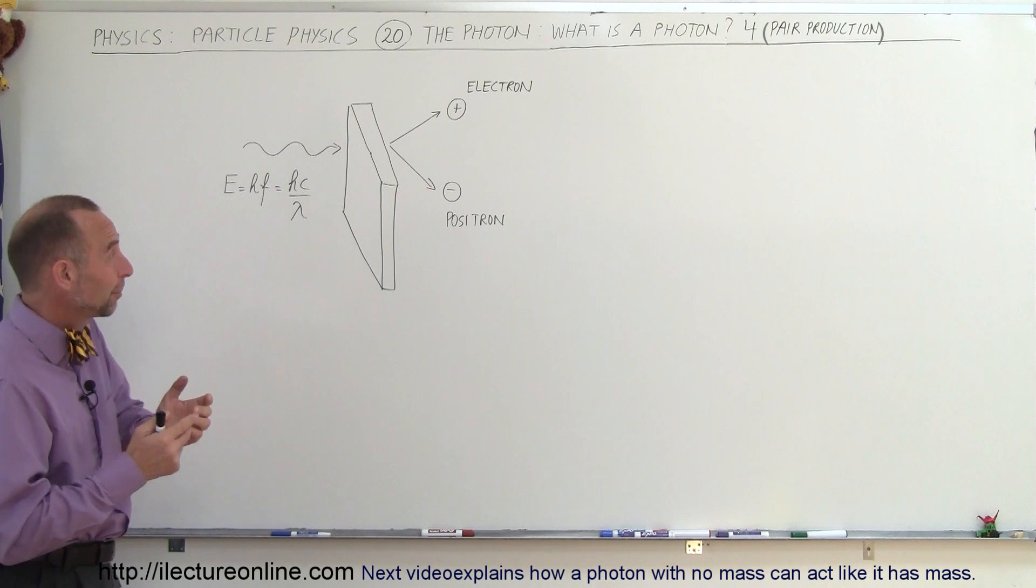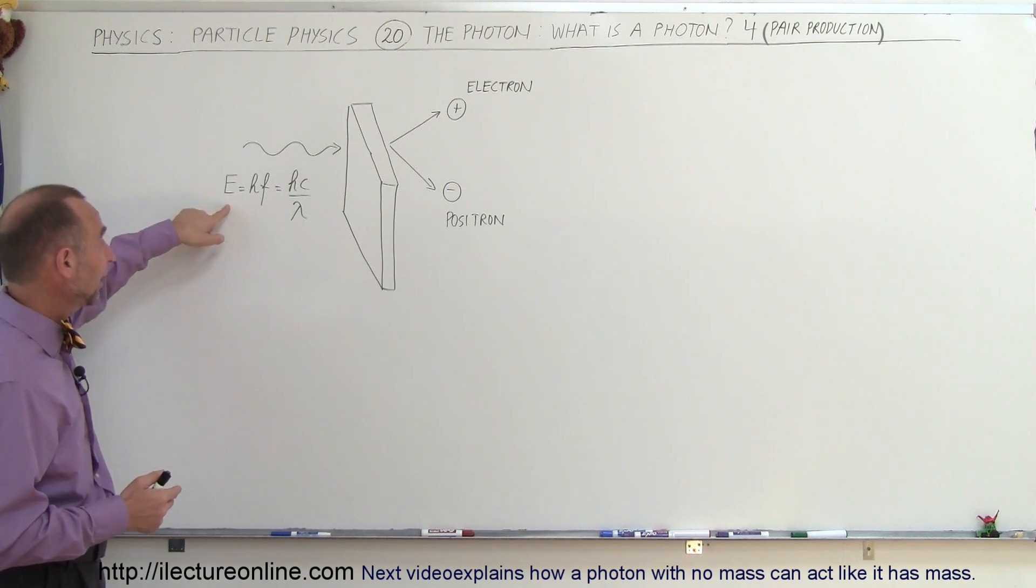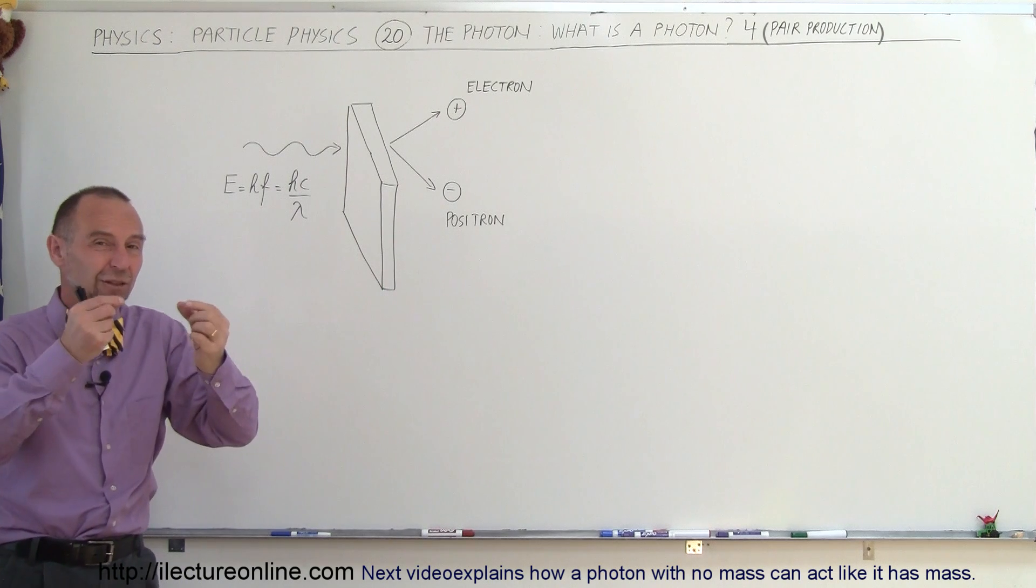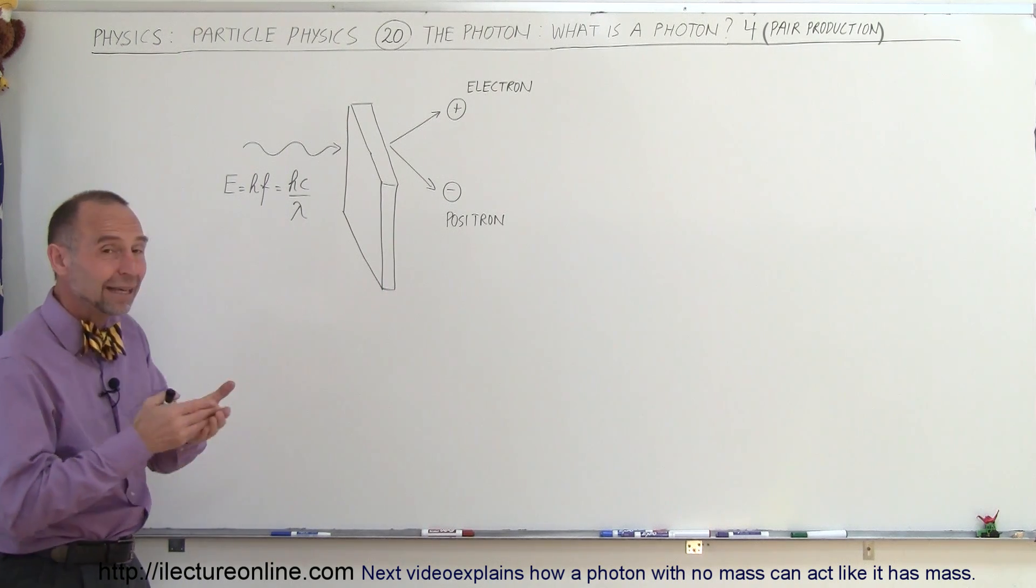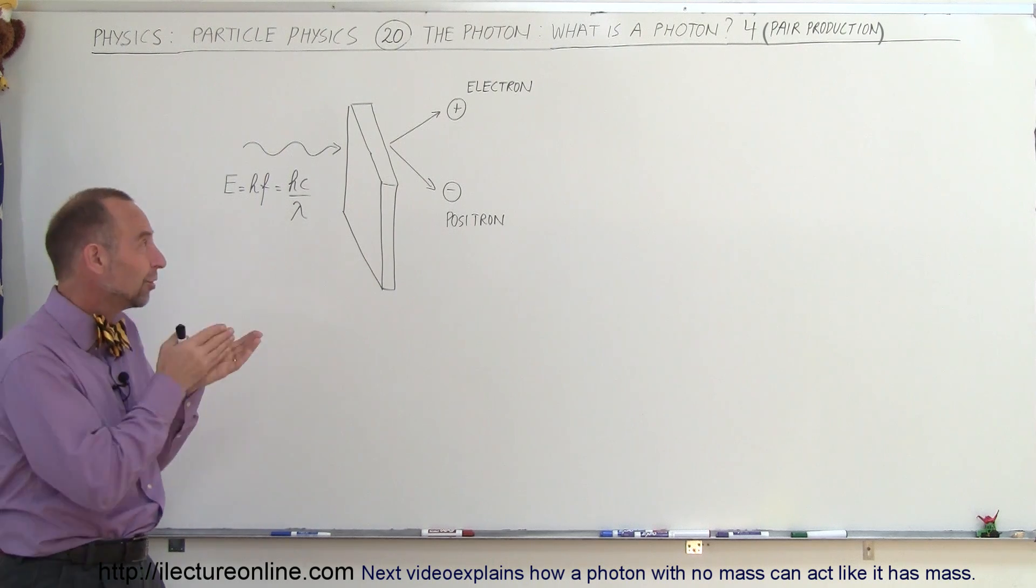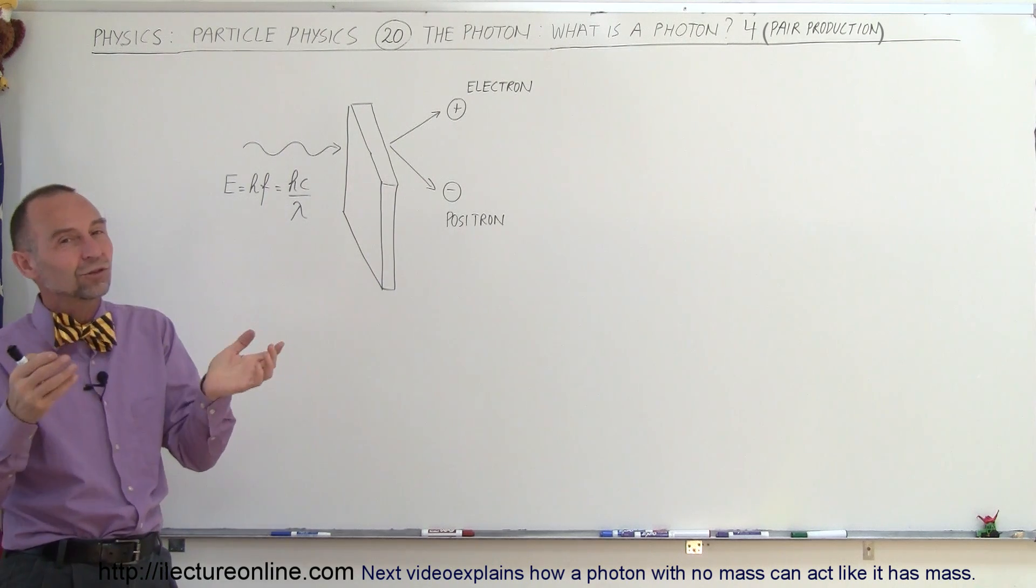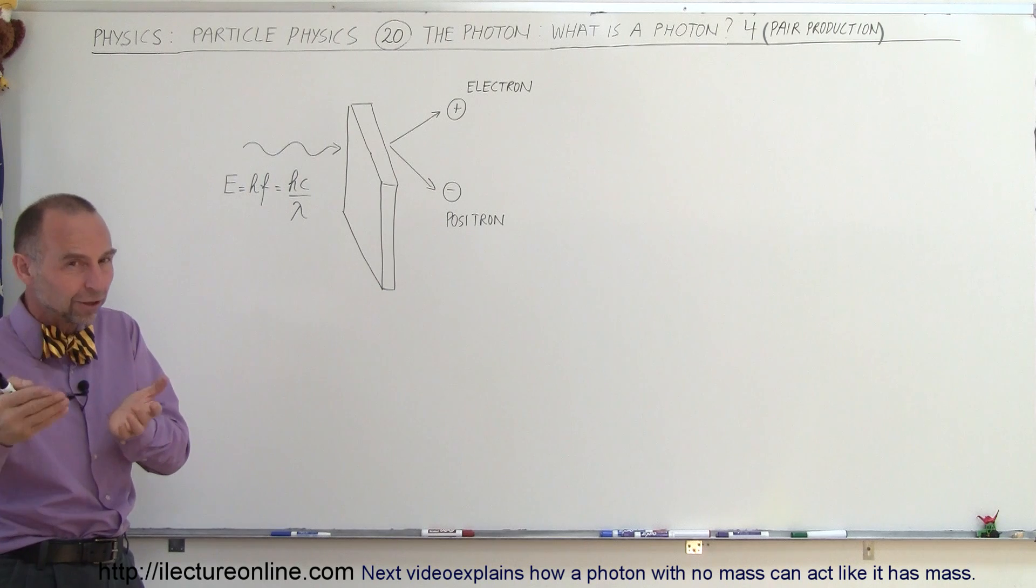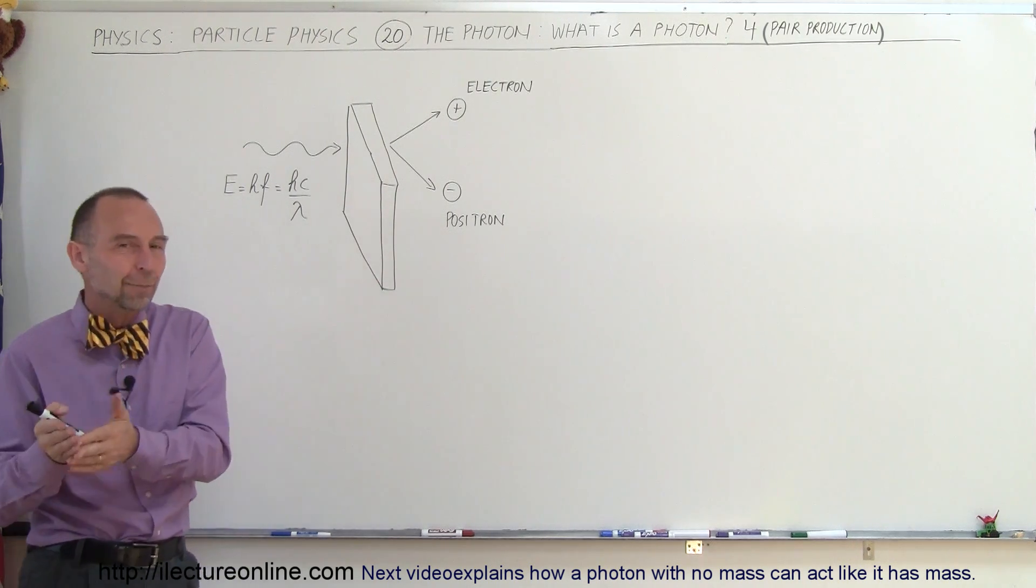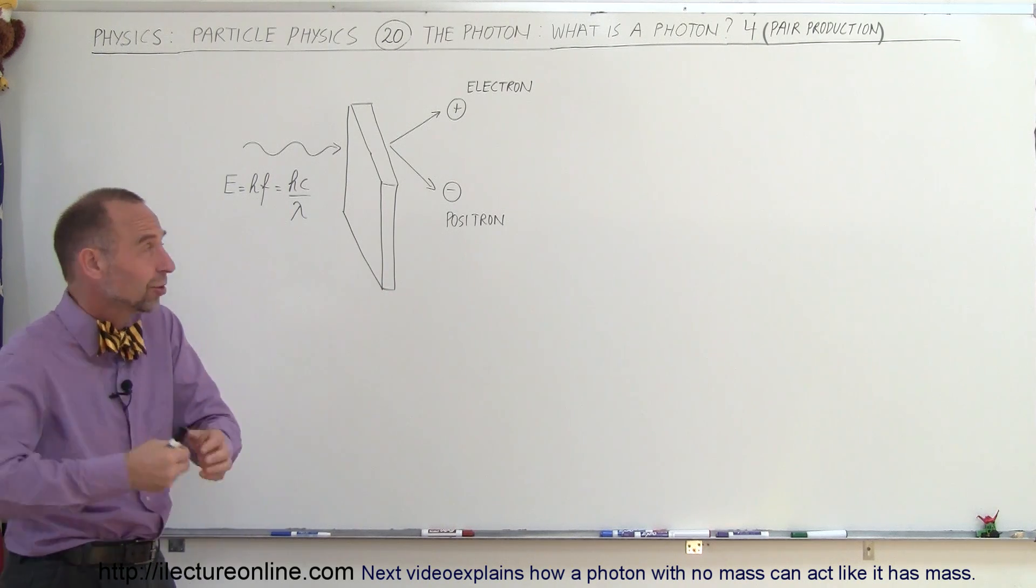For example, a photon that has sufficient amount of energy when impacting on a target, maybe like a small lead plate or something like that, if the conditions are just right, that photon will turn itself into two particles. Now it turns out when a photon turns itself into particles, it's usually a pair of particles, and one particle is a particle and the other one is an antiparticle. That's what we call pair production.